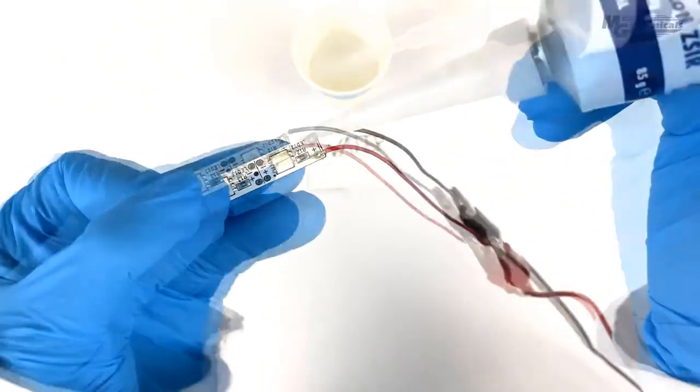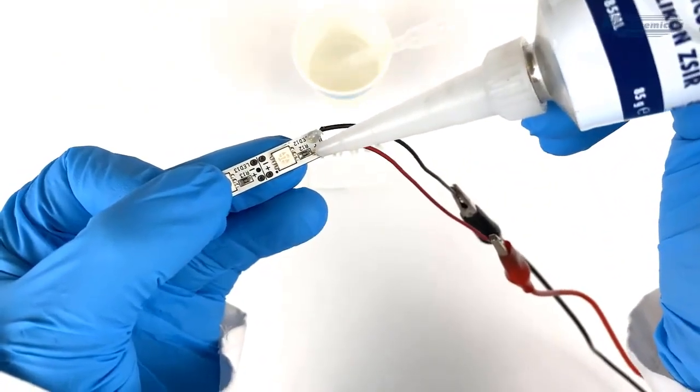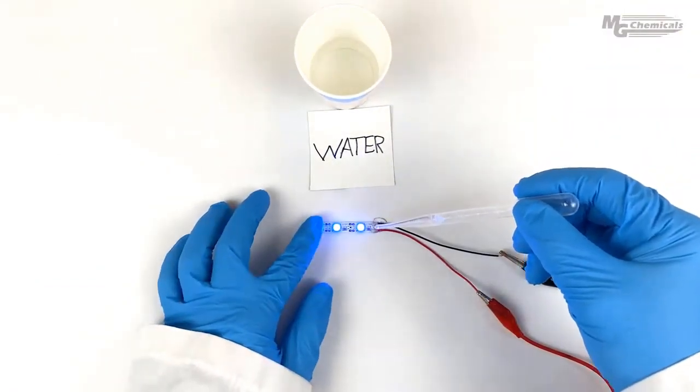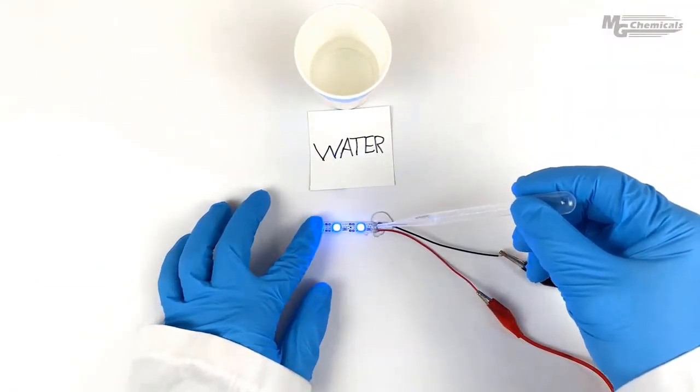Now, we'll add the dielectric grease around the connector. The hydrophobic nature of the grease seals water out, so the circuit continues to function as intended.